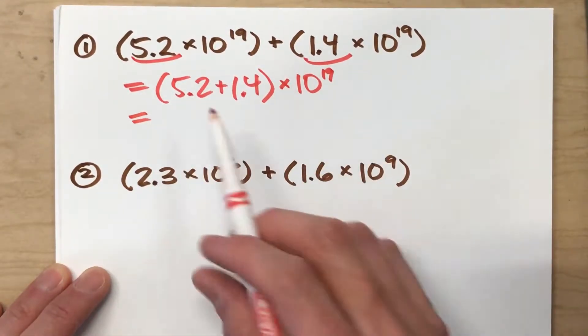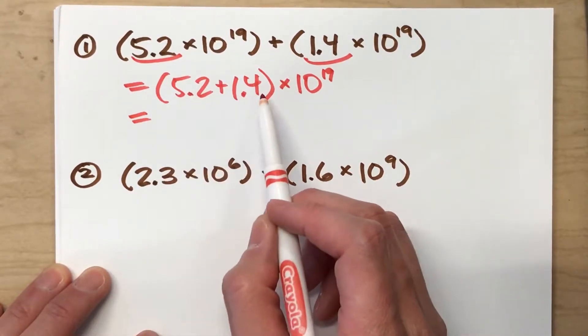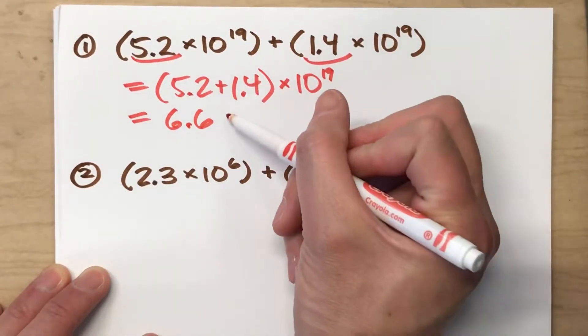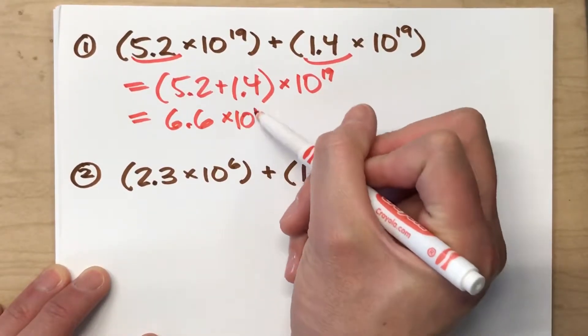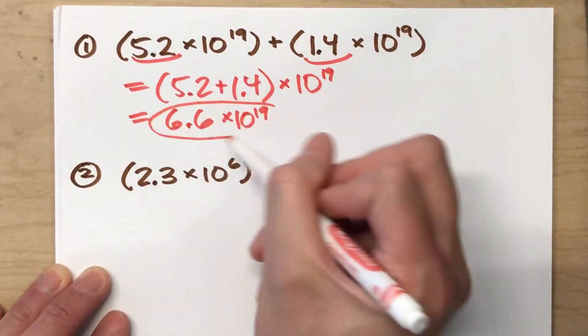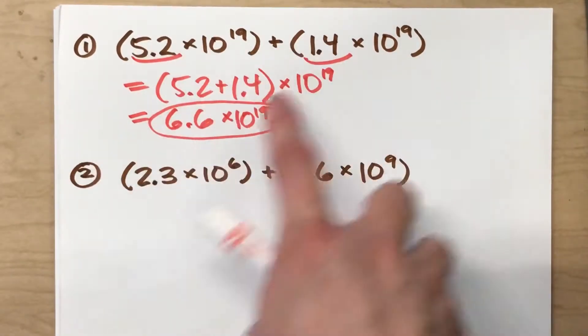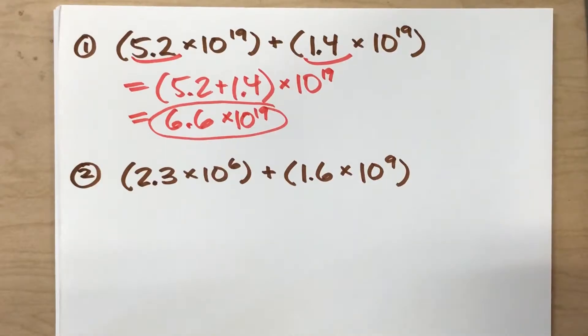So if you notice here, 5.2 plus 1.4 gets me 6.6, and then it's all being multiplied by 10 to the 19th power. So if I was adding up these two numbers, my answer would be 6.6 times 10 to the 19th power.